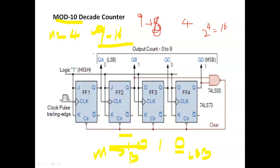The LSB value is 0 and the MSB value is 1. We put those values here — wherever there is a 1, that is QB and QC. Those outputs are connected to the input of a NAND gate, and the NAND gate output is connected to the clear input of all flip-flops. That gives us a mod 10 counter. So for mod 10, convert 10 to binary (1,0,1,0), identify where the 1s are, connect those Q outputs to the NAND gate, and connect the output to all flip-flop clear pins.